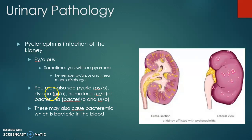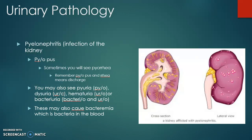Dysuria is difficulty urinating. Hematuria is blood in the urine. Bacteriuria is bacteria in the urine. These are all good examples of using uro — the combining form for urine — with different prefixes. If they give you the word dysuria and ask what's the combining form for urine, the answer is ur/o. Bacteriuria can also lead to bacteremia — bacteria in the blood.